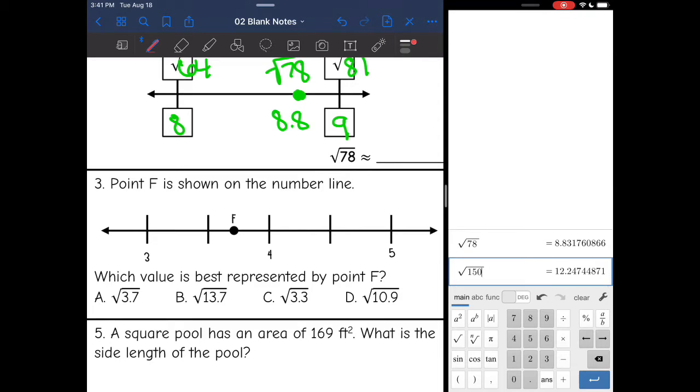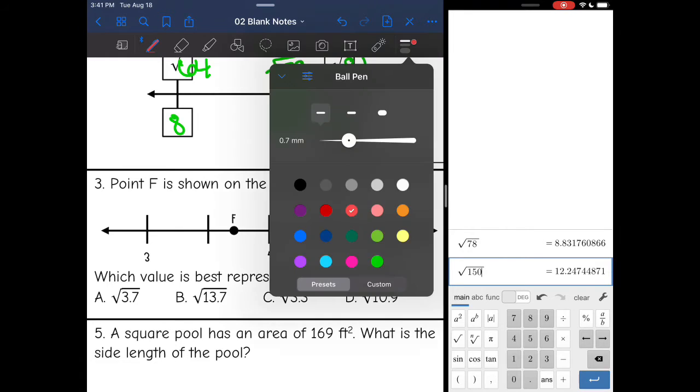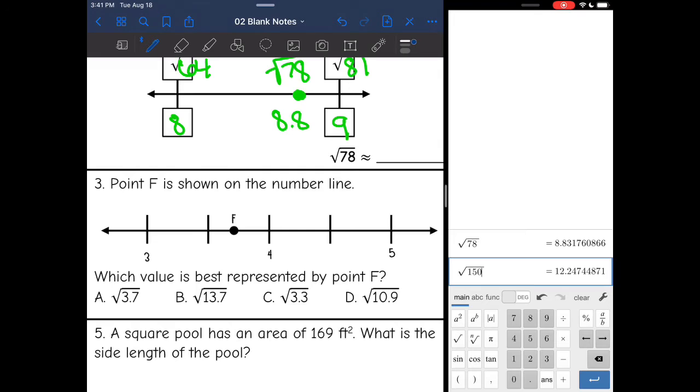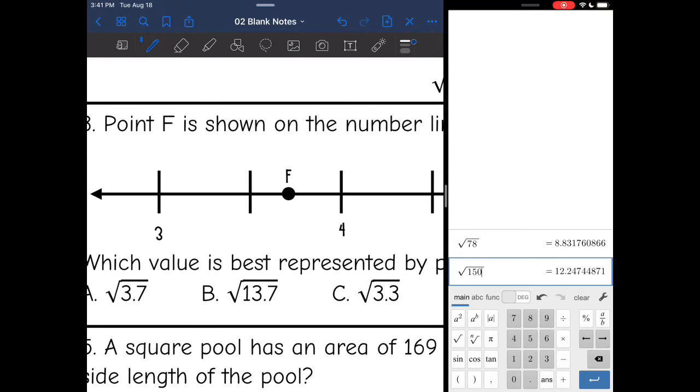This next one says, point F is shown on the number line below, which value is best represented by point F? So I'm going to go through these square roots and see which of the square roots simplifies to a number between 3 and 4, but is closer to 4.